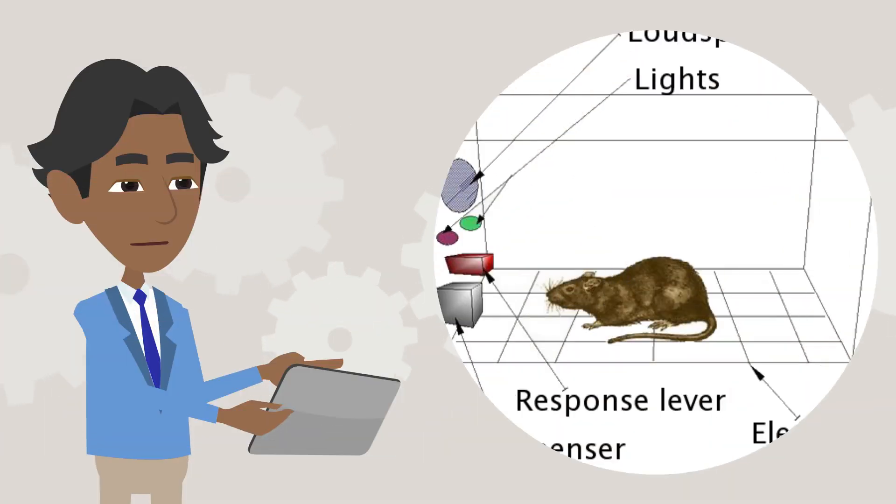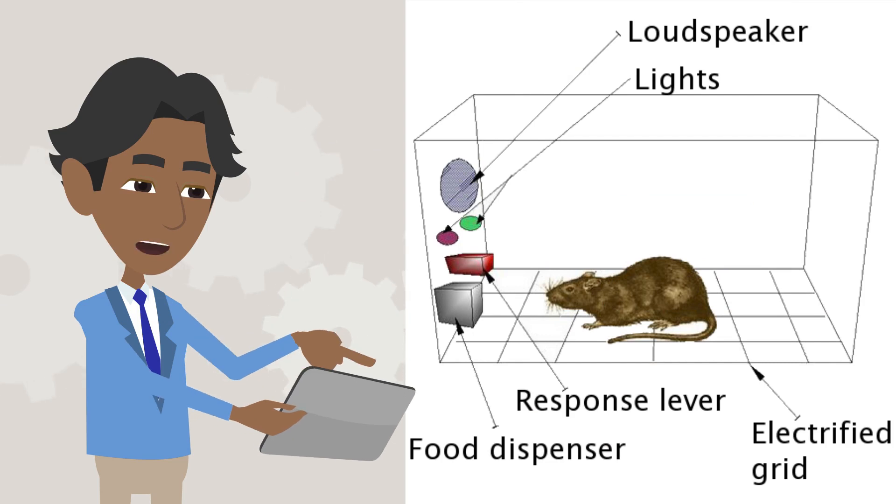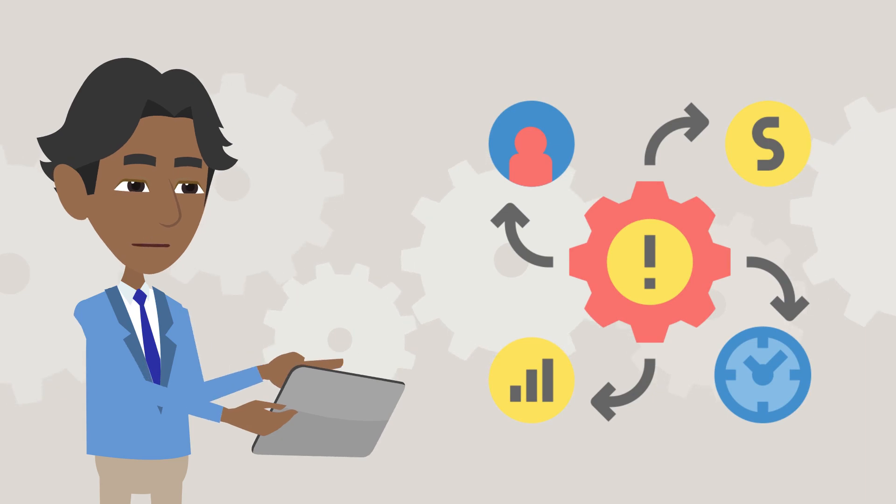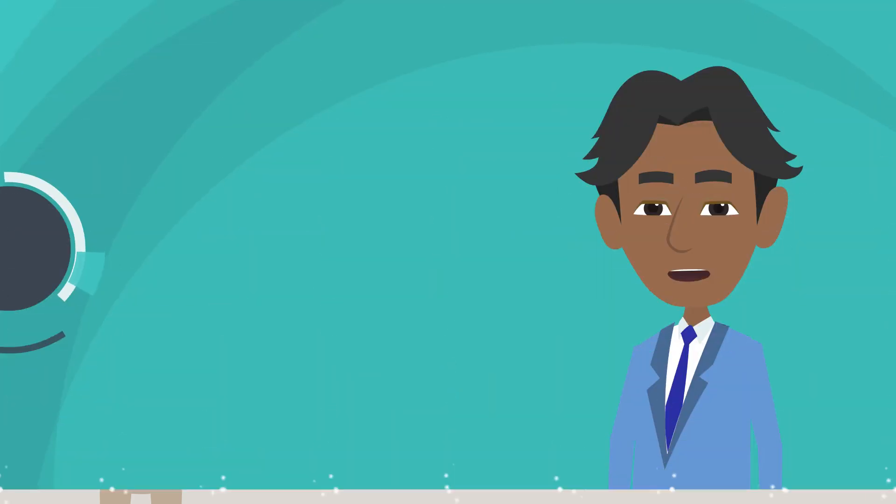By placing animals, usually rats or pigeons, in the box, Skinner was able to carefully observe their behavior and manipulate the consequences of their actions.